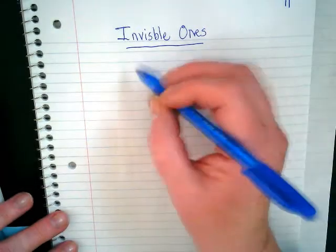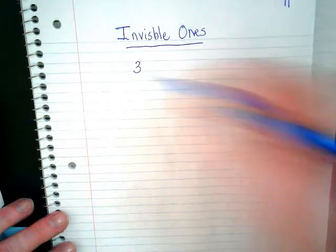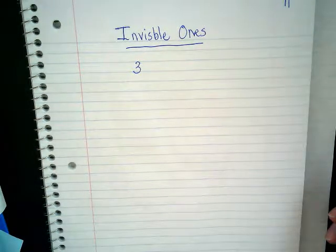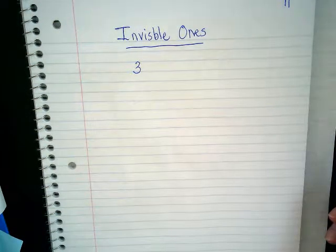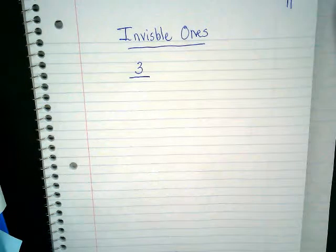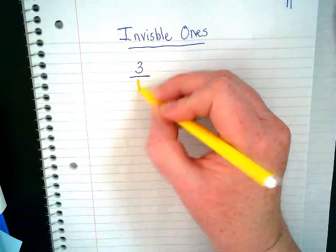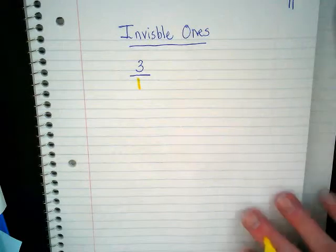Let's think about what you guys already know. If I show you the number three, it's got some invisible ones with it. I'll draw a line underneath it and then show in yellow that invisible one. All whole numbers are fractions over an invisible one.